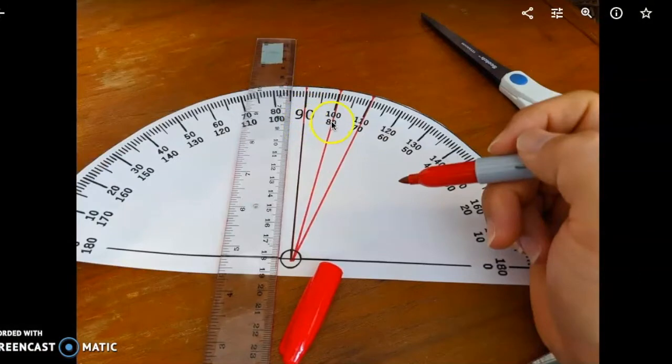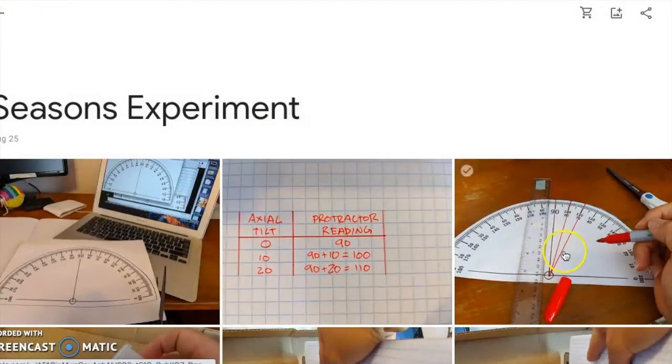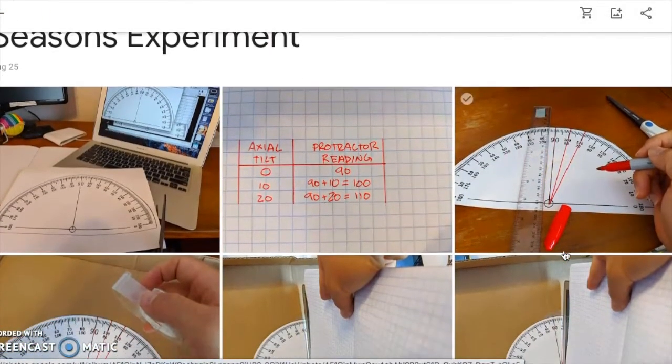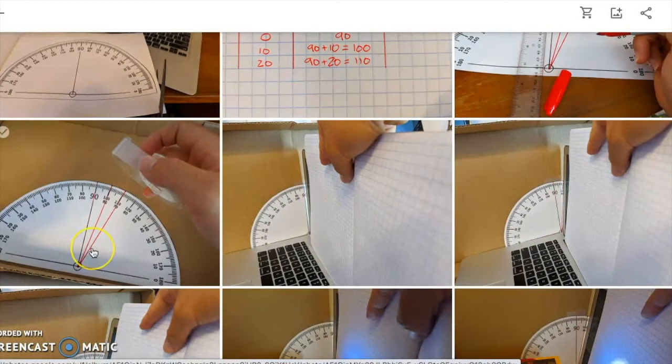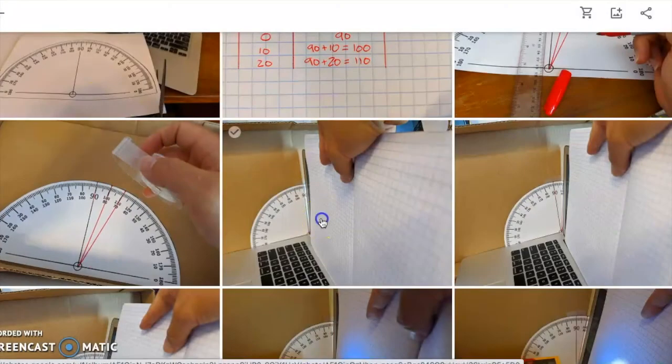There are three different angles that I can test to see, and I chose 90 degrees, 100, and 110. Well, this represents a zero degree axial tilt, a 10 degree axial tilt, and a 20 degree axial tilt. Here is how the math works out: A zero degree axial tilt would have the protractor reading at 90, so I marked those on my protractor with my red pen.